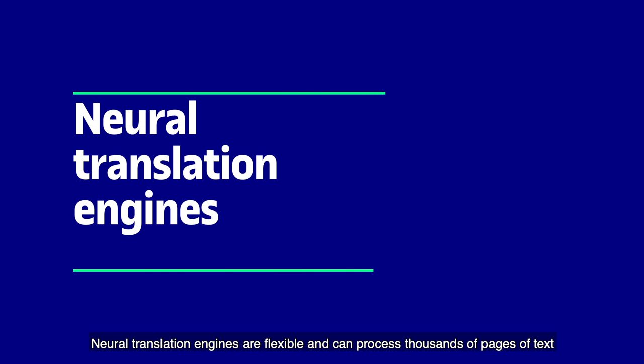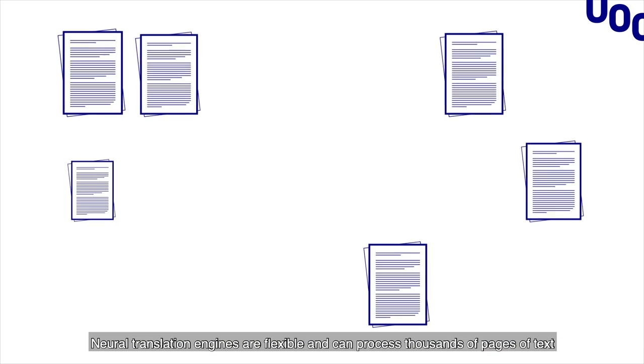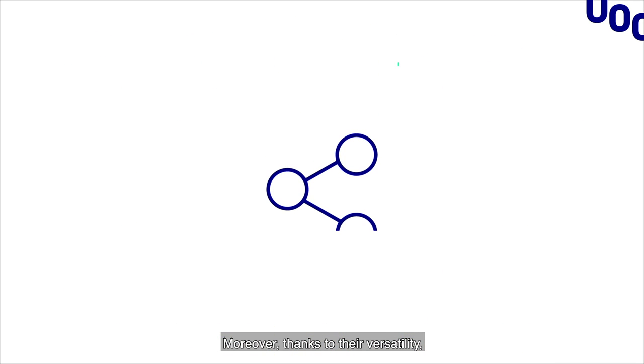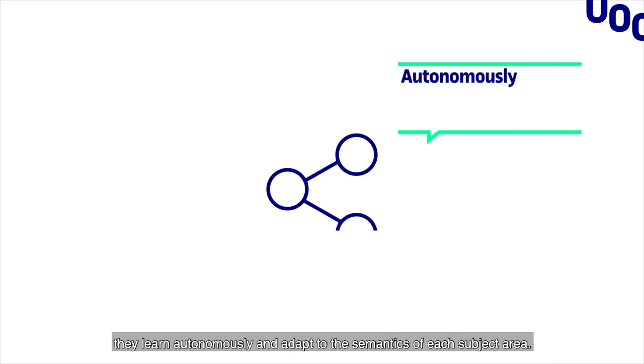Neural translation engines are flexible and can process thousands of pages of texts while minimizing lexical and grammatical errors. Moreover, thanks to their versatility, they learn autonomously and adapt to the semantics of each subject area.